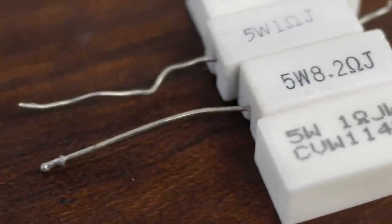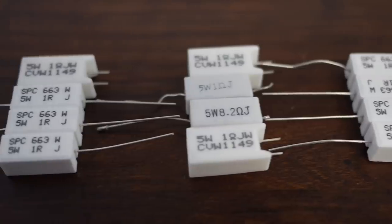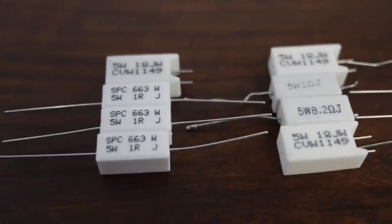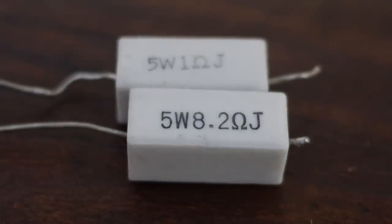Wire wound resistors are made with wire with higher than normal resistance. This gives them a high level of reliability and comparatively low level of temperature coefficient, making them well-suited to handle high powers.